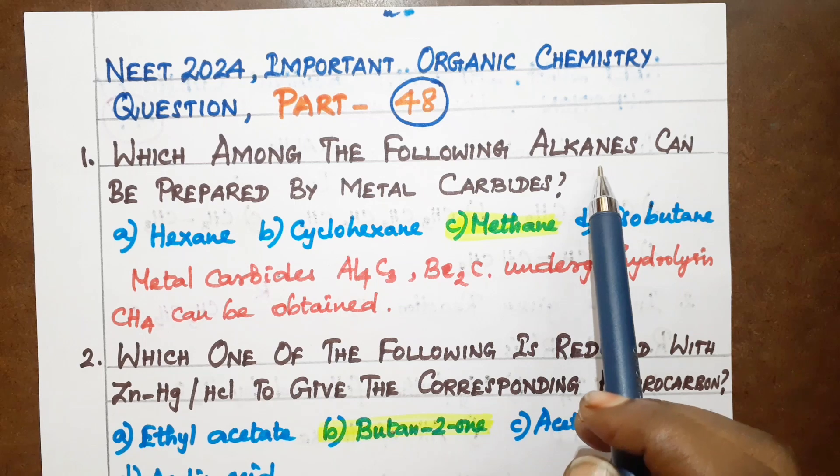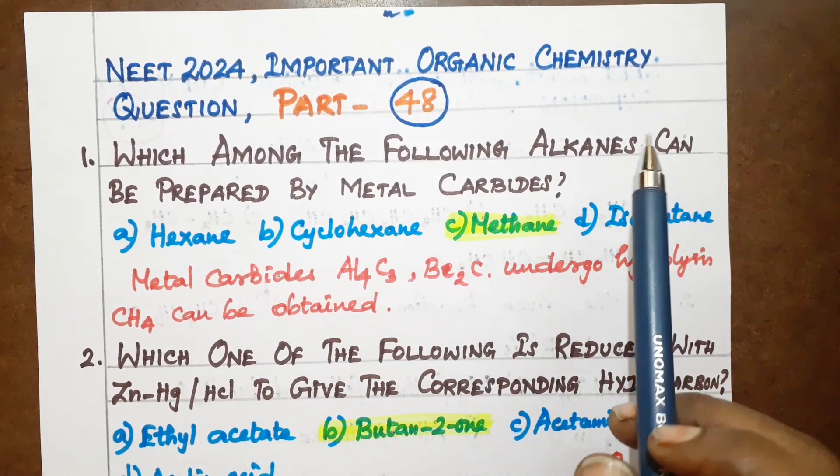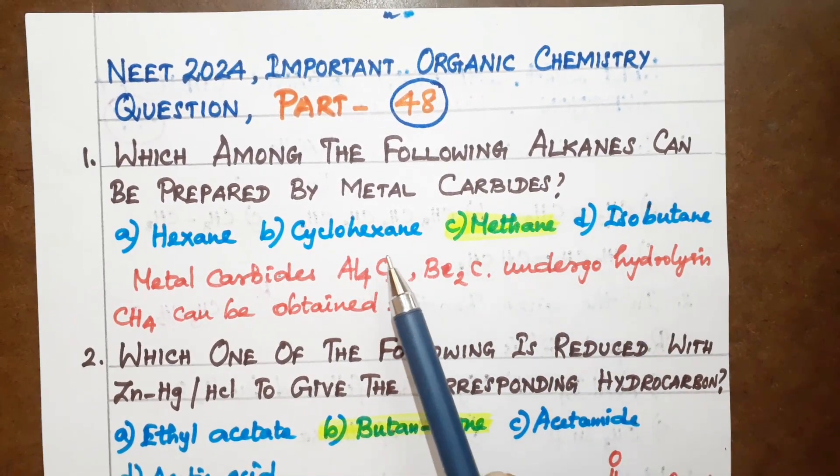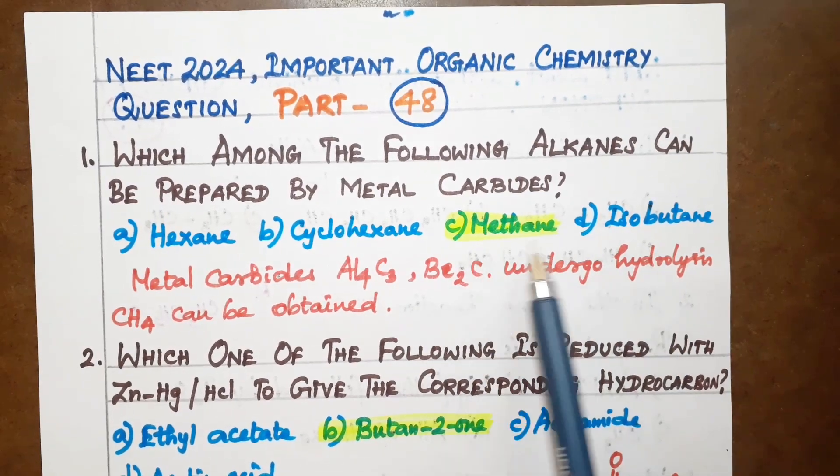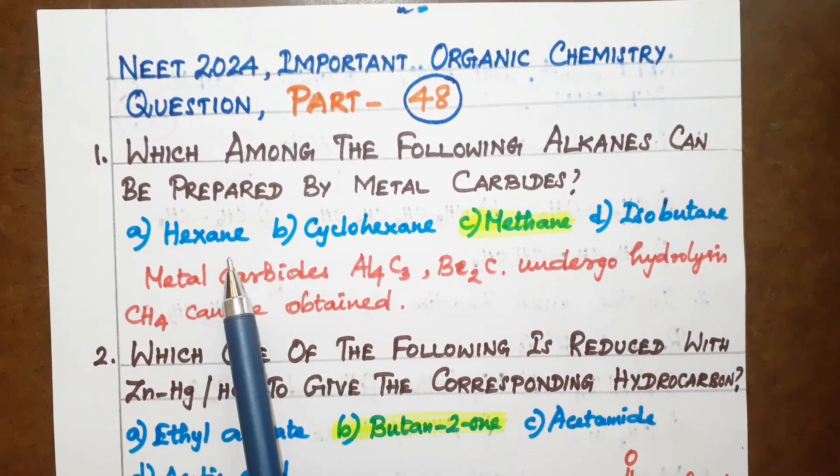Which among the following alkanes can be prepared by metal carbides? Metal carbides are used to prepare alkanes. That is the question. First, hexane.